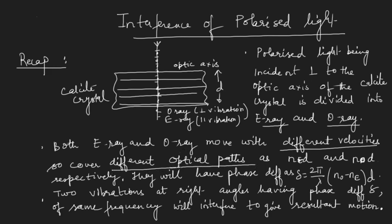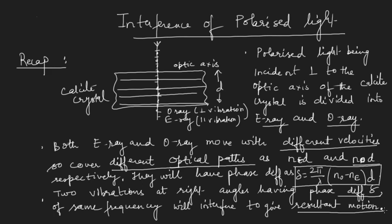The two rays cover different optical paths inside the crystal: Ne×d and N₀×d respectively. Due to the difference in optical path, there will be a path difference delta equal to (N₀ - Ne)×d, and a phase difference of (2π/λ)(N₀ - Ne)×d. The E-ray and O-ray, which are perpendicular to each other with this phase difference delta and the same frequency, will then interfere to give a resultant motion.